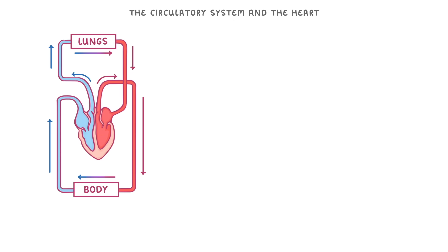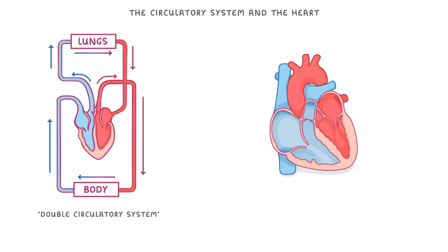In this video we're going to start off by looking at what the circulatory system is and see why most mammals like ourselves have a double circulatory system. Then we'll take a closer look at the heart and cover the names of the different chambers and vessels.